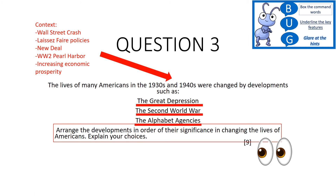Let's start thinking about context. In the 1930s and 1940s, you've got the Wall Street Crash — on the 29th of October 1929 the stock market crashes, and that leads to the Great Depression. The Great Depression wouldn't count as context, but the Wall Street Crash would. You've got the laissez-faire policies of Herbert Hoover, where he believed the government shouldn't interfere. You've got the New Deal, which is made up of the Alphabet Agencies. And in terms of World War II, you've got Pearl Harbor, and increasing economic prosperity after the war finishes in 1945.